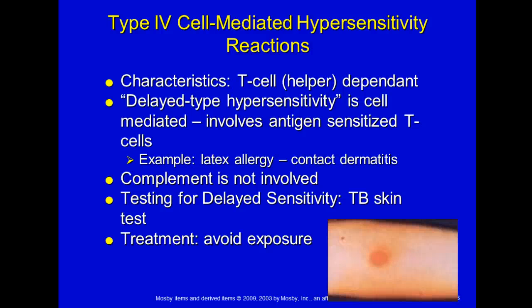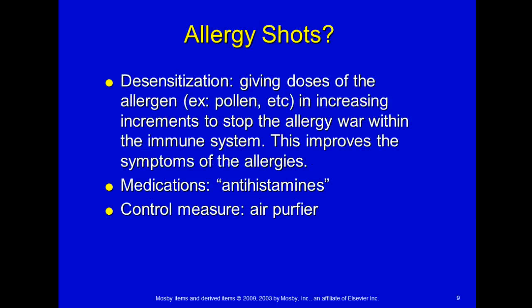Type 4 is a cell-mediated hypersensitivity reaction, called delayed-type hypersensitivity because it occurs after prolonged exposure. It is T helper cell-dependent and involves antigen-sensitized T cells. A latex allergy causing contact dermatitis is an example. Complement is not involved. Testing for delayed sensitivity includes the TB skin test, which checks for prior tuberculosis exposure. The only treatment is to avoid the exposure — for example, not wearing latex gloves if you're allergic.